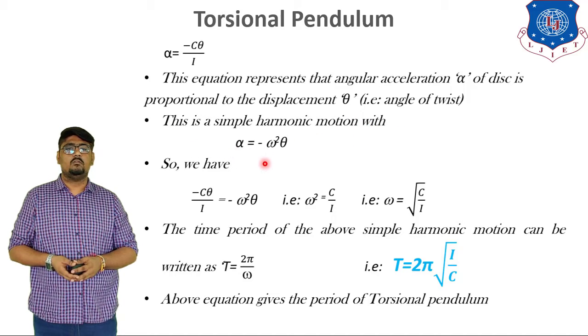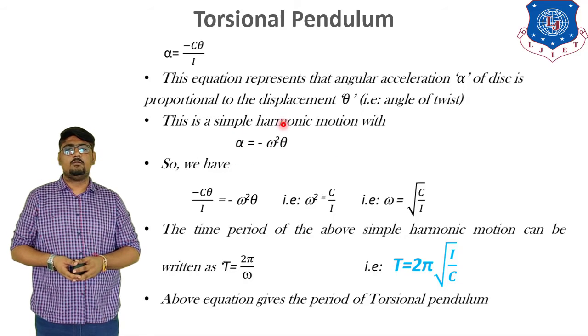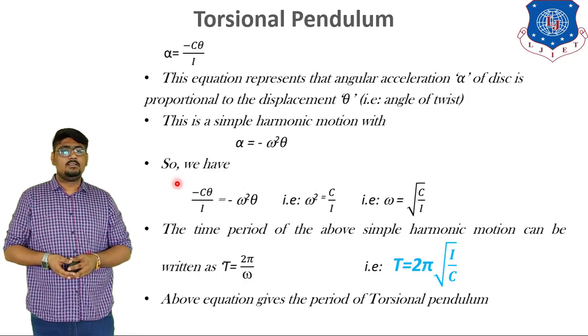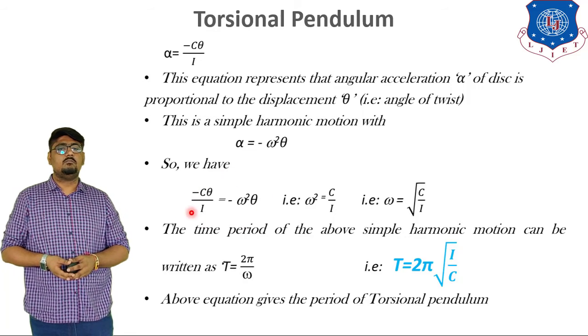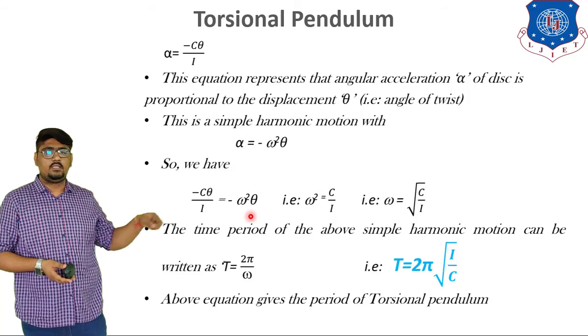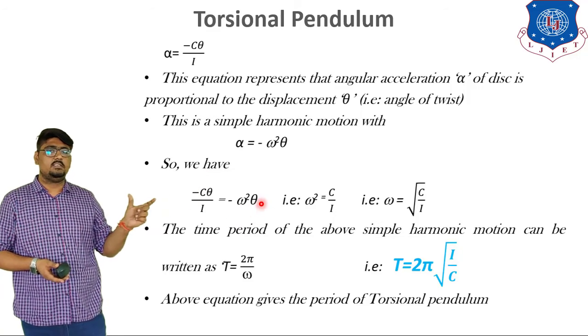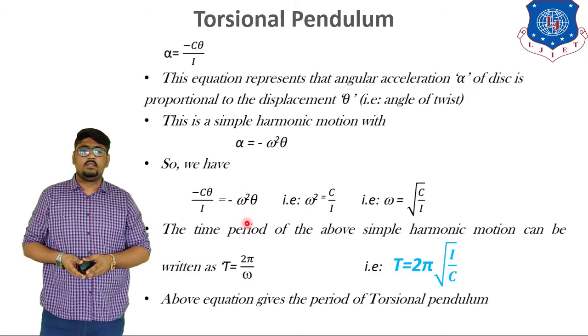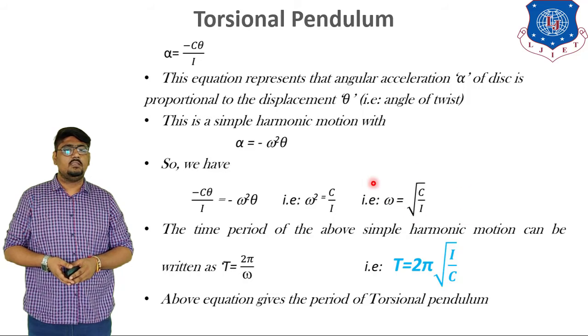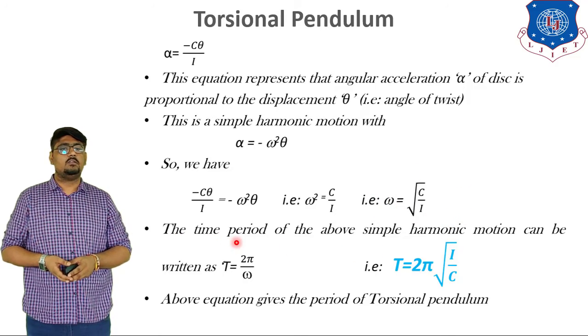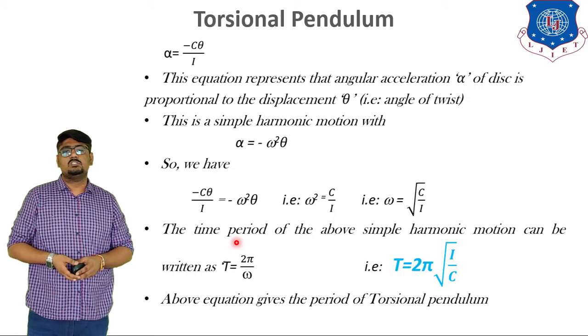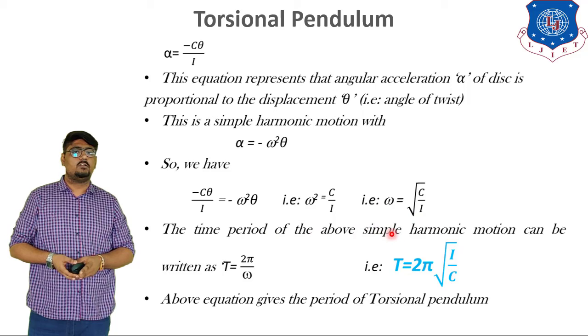So, this is the simple harmonic motion. For that we have the equation alpha is equal to minus omega square theta. So, we have minus C theta by I is equal to minus omega square theta. You can see over here. Now, solving for the value of omega, we get omega square is equal to C upon I. So, we get omega is equal to under root C upon I. First, we have got omega square, and thereafter taking square root on both sides, we get omega is equal to under root C by I.